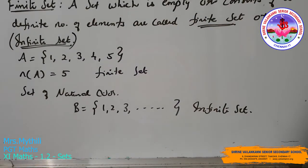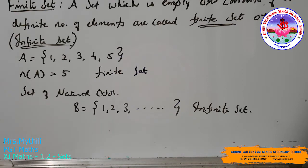Finite and infinite sets: a set which is empty or consists of a definite number of elements is called a finite set; otherwise it is called an infinite set. For example, if A equals {1, 2, 3, 4, 5}, then n(A) equals 5, which is a finite set. The number of elements is easily countable, so we say it is a finite set.